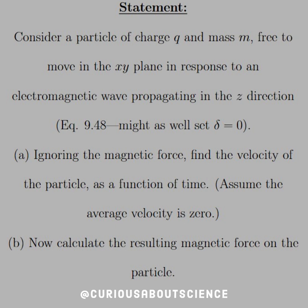This is equation 9.48. We'll set delta, or the phase angle, equal to zero. Part A: ignoring the magnetic force, find the velocity of the particle as a function of time. Assume the average velocity is zero.